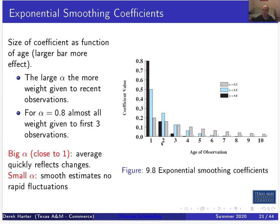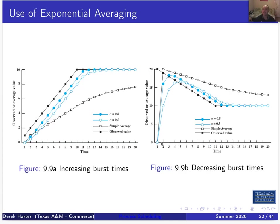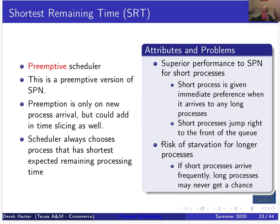Back to our schedulers. The next one is Shortest Remaining Time — essentially the same as Shortest Process Next but the preemptive version. We're going to do preemption differently than round robin, which was covered in the previous lecture.